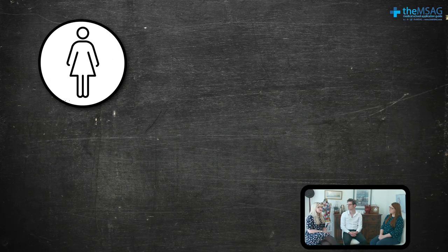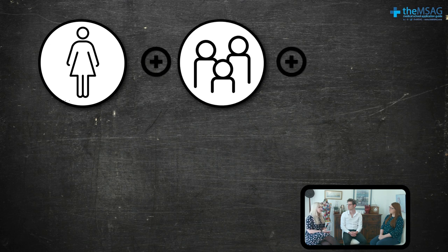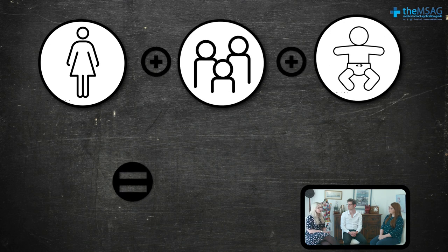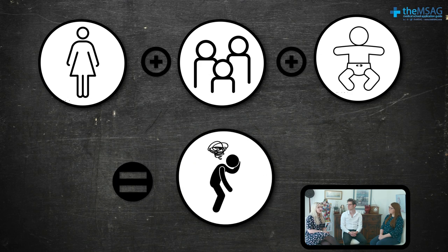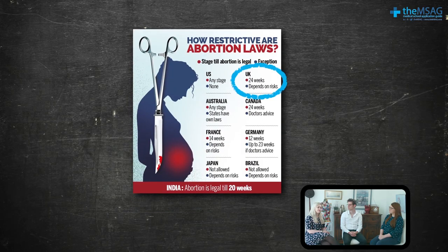Also important to consider are any other children that this mother has. If she is already struggling to care for three children at home, a new baby would place increased stress on the family and might not be in their best interests. The concept that a new baby would be detrimental to the physical or mental health of any existing children is actually a reason a doctor is allowed to perform an abortion up to 24 weeks in the UK.